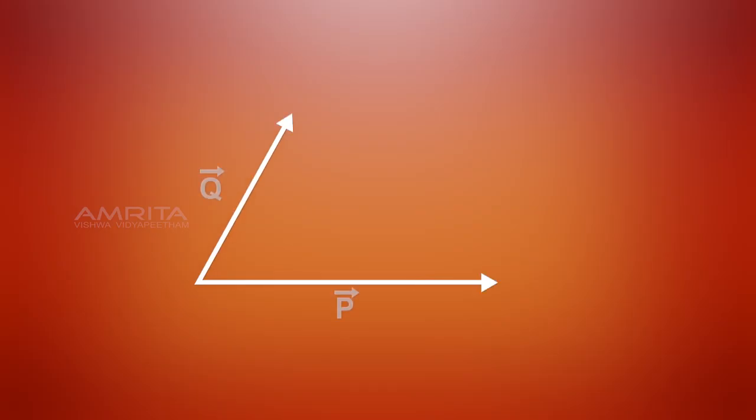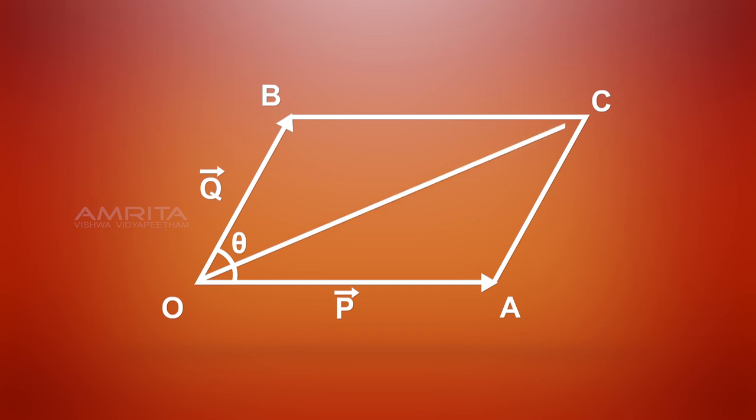Principle: Let two vectors P and Q act simultaneously on a particle O at an angle θ. They are represented in magnitude and direction by the adjacent sides OA and OB of a parallelogram OACB. Then the diagonal OC passing through O will represent the resultant R in magnitude and direction.